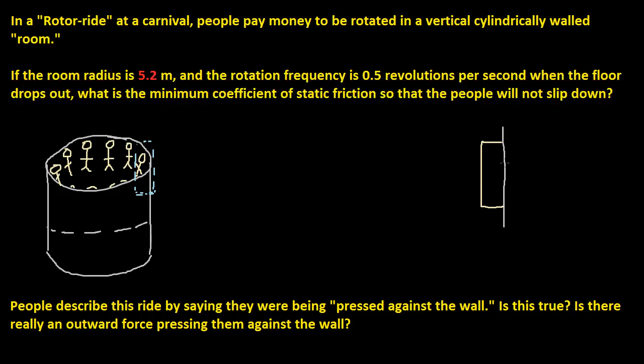Well, first we have this normal force coming from the wall because a person is pressing against the wall, so that would be force of normal. And we have our weight, and that turns out to be mg. And also, we have our static friction which goes upward. So friction of s equals mu of s times force of normal.